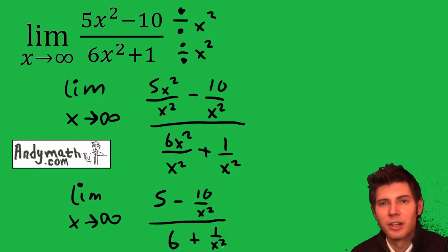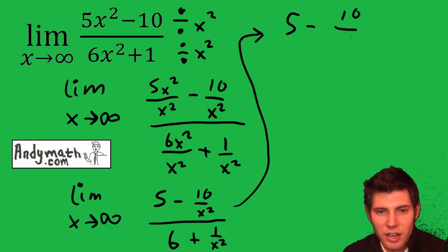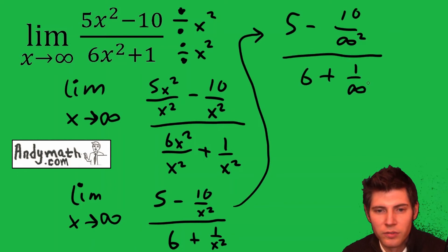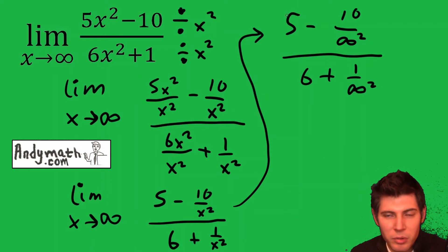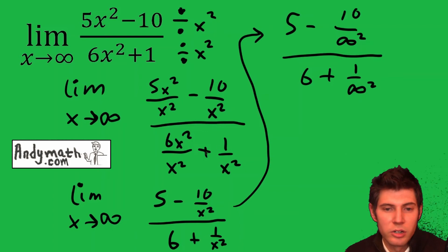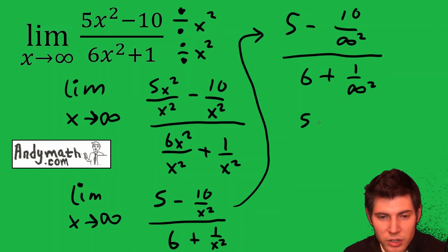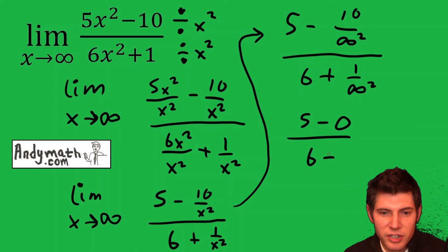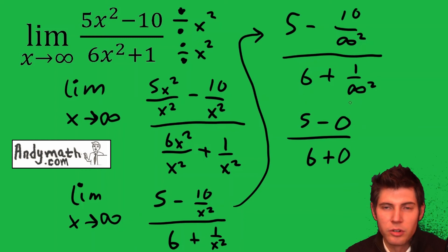Now we're ready to plug in the infinity symbol. So this is 5 minus 10 over infinity squared divided by 6 plus 1 over infinity squared. Anytime you divide a number by infinity, it becomes 0 because that infinity is so large, it makes it 0. So this becomes 5 minus 0 over 6 plus 0 because those two numbers are both 0 since they're being divided by infinity squared.